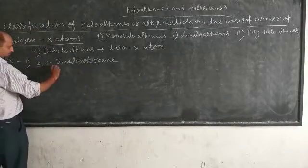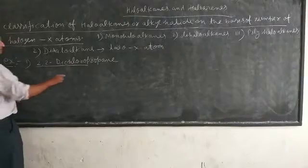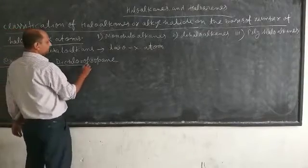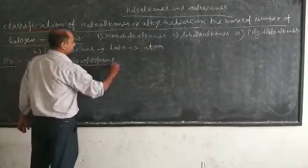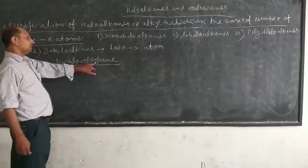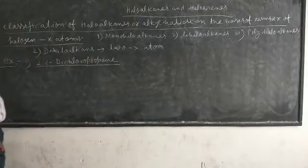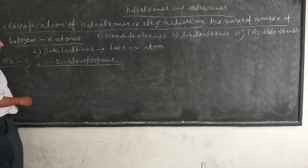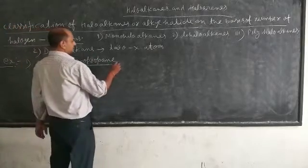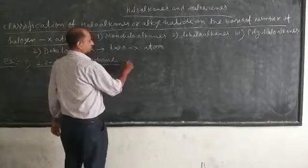This is our prefix part, dichloropropane, and this is our main chain. Main chain contains three carbons. First we draw the structure of the main chain and longest chain. In the longest chain there are three carbon atoms. Look here.